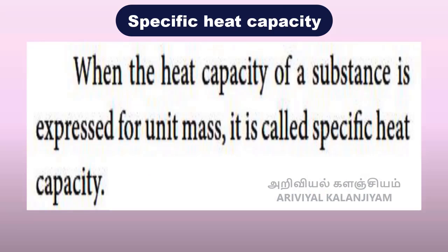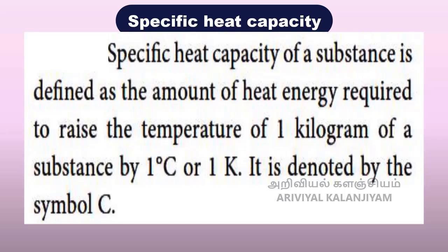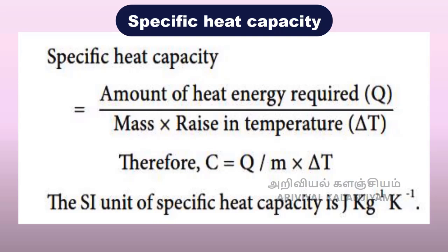Specific heat capacity: When the heat capacity of a substance is expressed for unit mass, it is called specific heat capacity. Specific heat capacity of a substance is defined as the amount of heat energy required to raise the temperature of 1 kilogram of substance by 1 degree Celsius or 1 Kelvin. It is denoted by the symbol C. Specific heat capacity C equals the amount of heat energy required Q divided by mass m multiplied by the change in temperature delta T, i.e., C = Q / (m × ΔT). The SI unit of specific heat capacity is Joule kilogram⁻¹ Kelvin⁻¹.